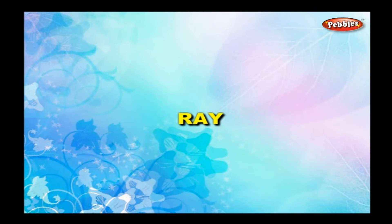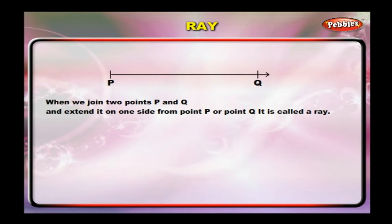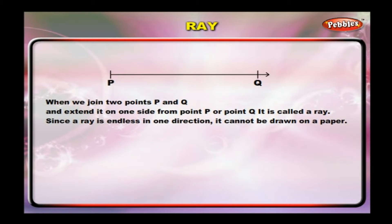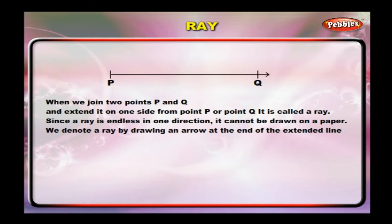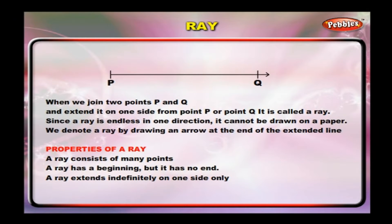Ray. When we join two points P and Q and extend it on one side from point P or point Q, it is called a ray. Since a ray is endless in one direction, it cannot be drawn on a paper. We denote a ray by drawing an arrow at the end of the extended line. Properties of a ray: a ray consists of many points, has a beginning but no end, extends indefinitely on one side only, and its length cannot be measured.